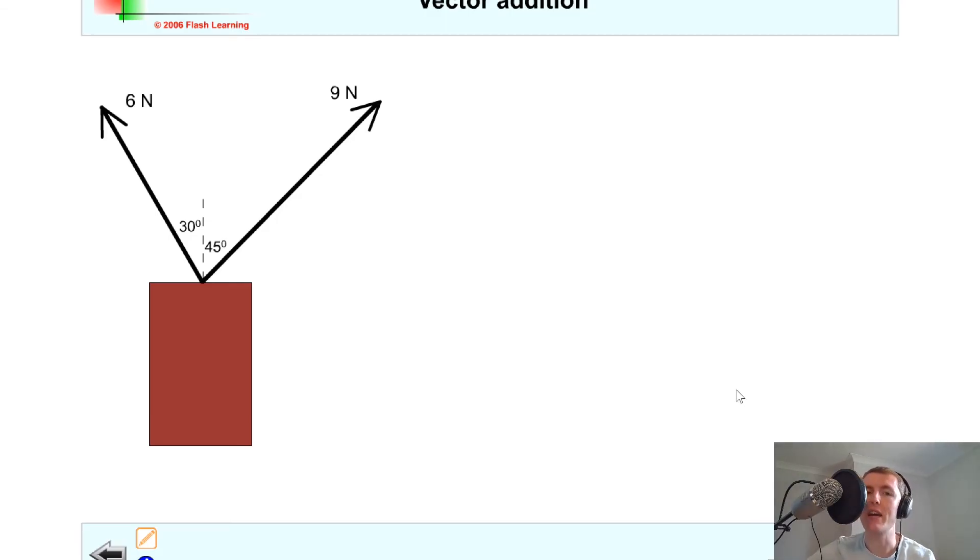But remember the key rule for adding two vectors together is we need to add them nose to tail. So clicking on the two vectors to get some movable vectors, I'm going to bring this vector down here, and then I'm going to add this other one over here nose to tail.